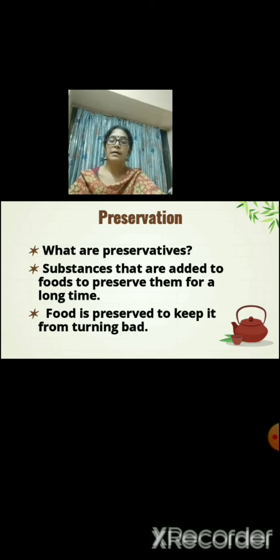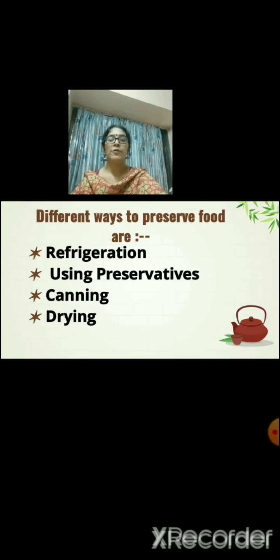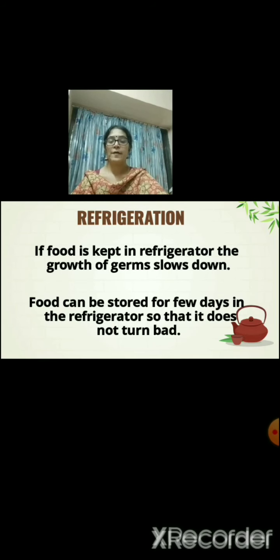The next method we will learn about is preservation. What are preservatives? Preservatives are substances that are added to foods to keep them safe for a longer period of time. Different ways to preserve food are refrigeration, using preservatives, canning, and drying. If food is kept in the refrigerator, the growth of germs slows down and food can be stored for a few days so that it does not turn bad.